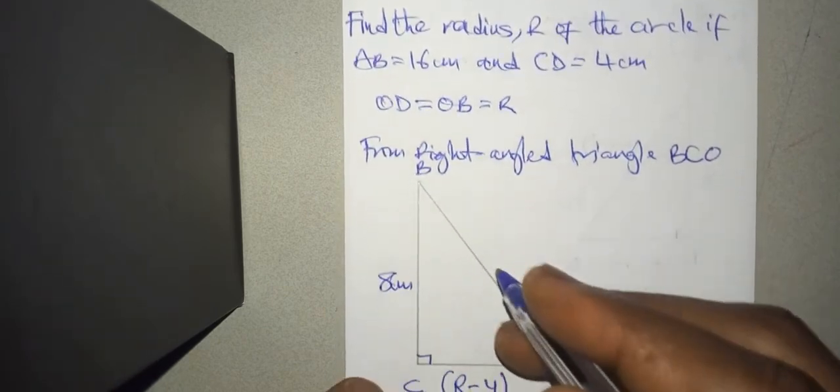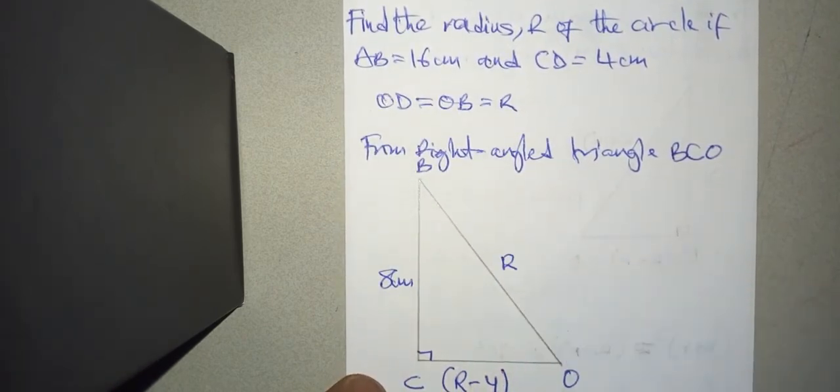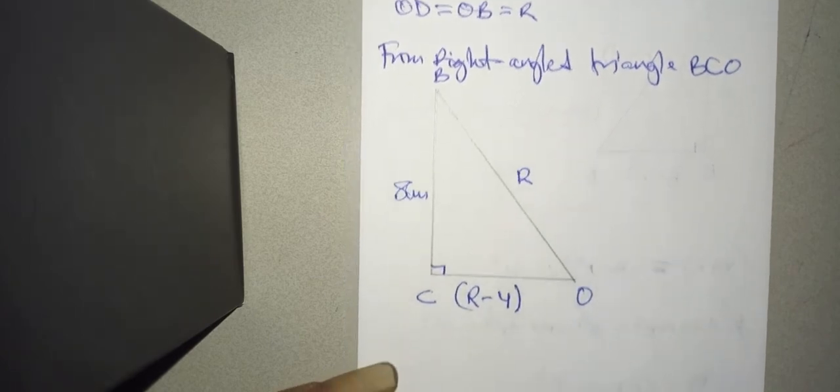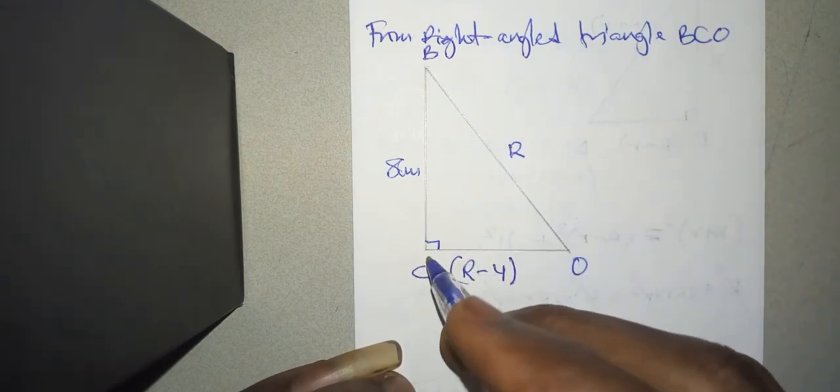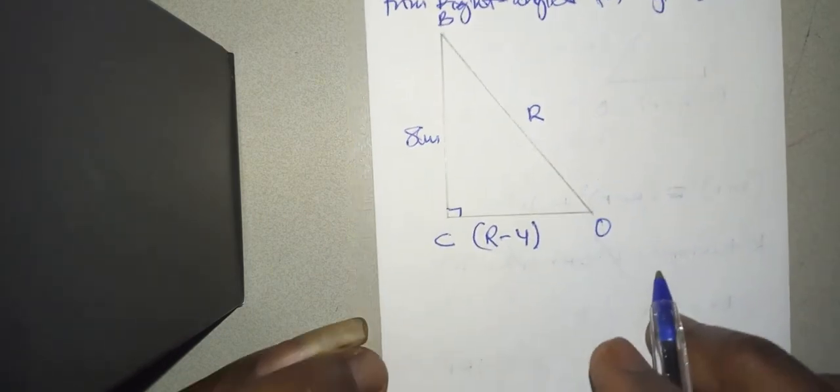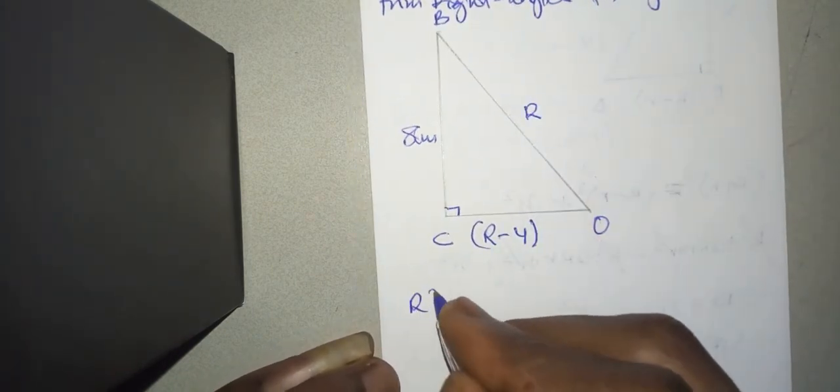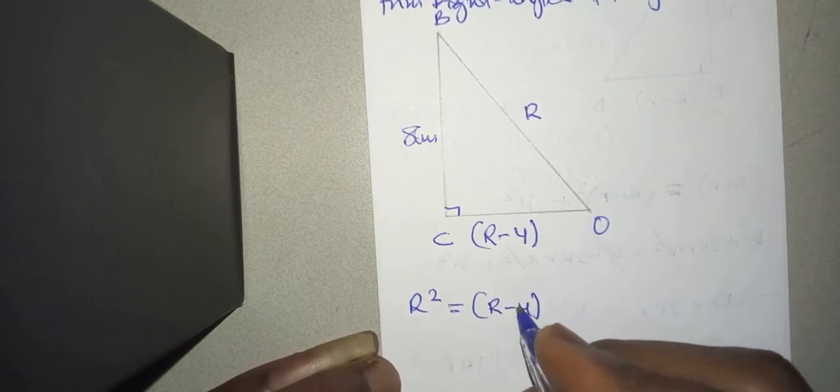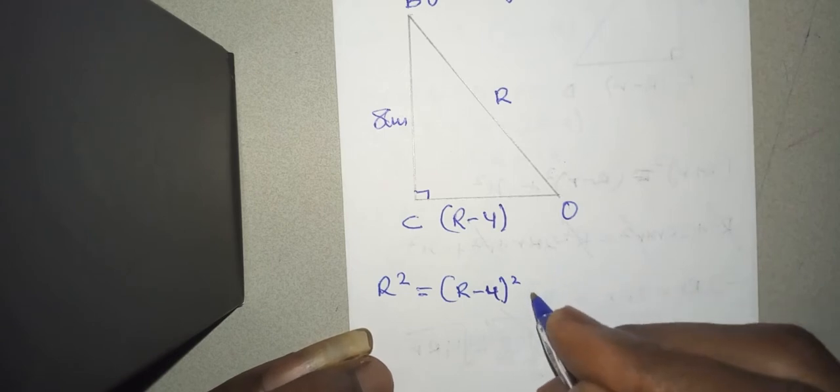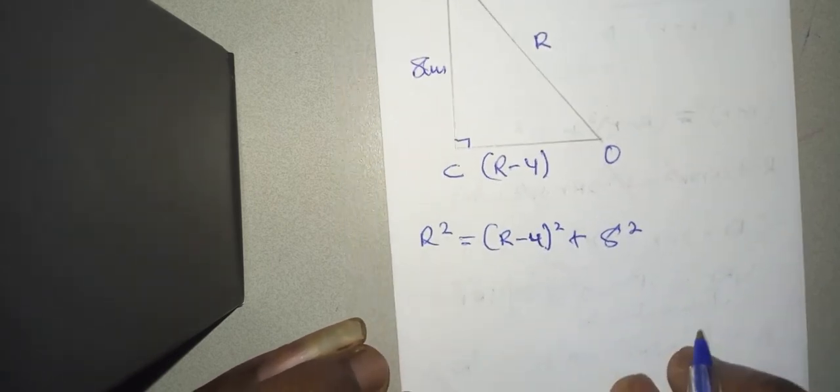Of course you know what we are going to do - Pythagorean theorem. We know that the hypotenuse squared is equal to the longer leg squared plus the shorter leg squared. So we are going to say R squared equals (R minus 4) squared plus 8 squared.